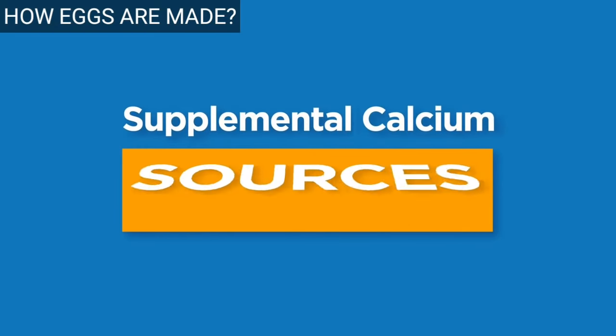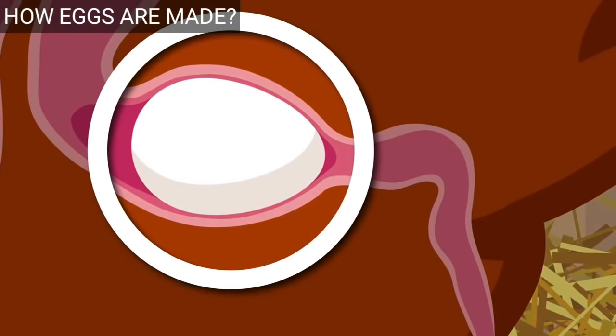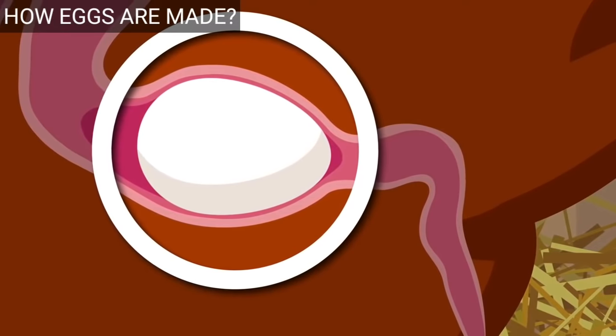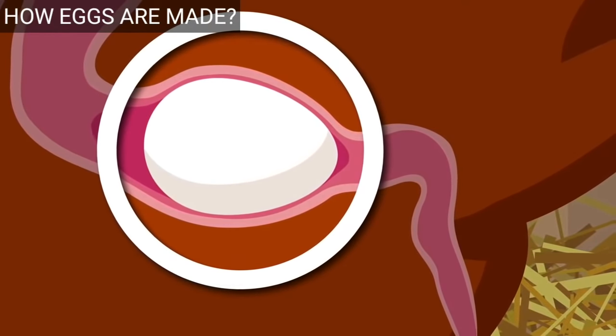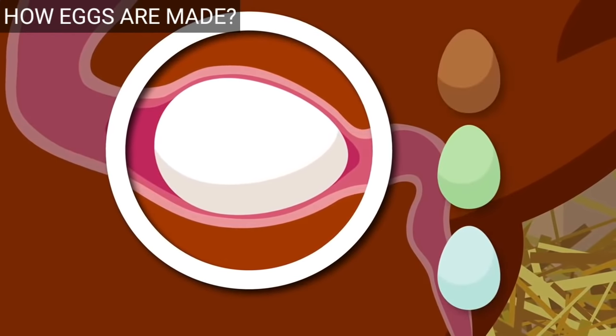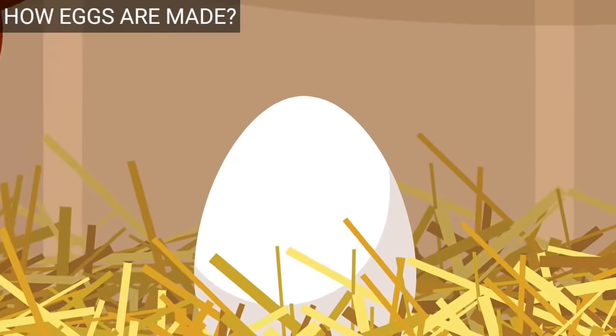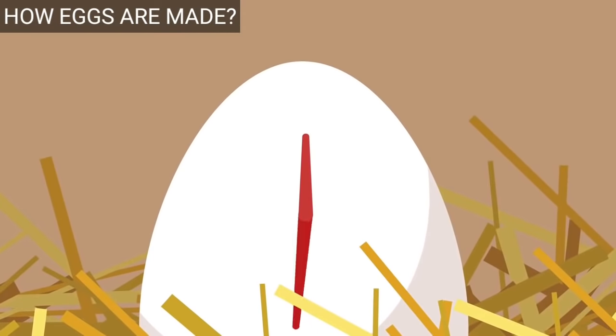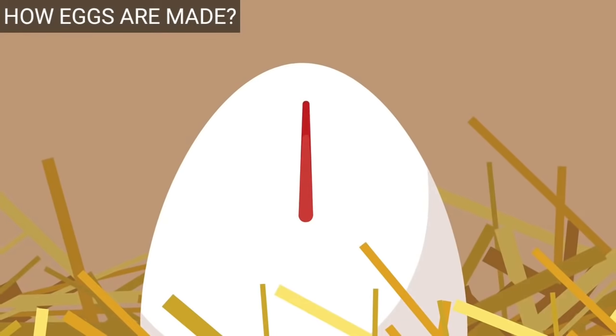Pigment is also added to the shell. Depending on the breed, the shell may be colored in shades of white, blue, green, or brown. Once complete, the egg passes through the vent of the chicken and into the nest. This incredibly intricate process takes roughly one day.